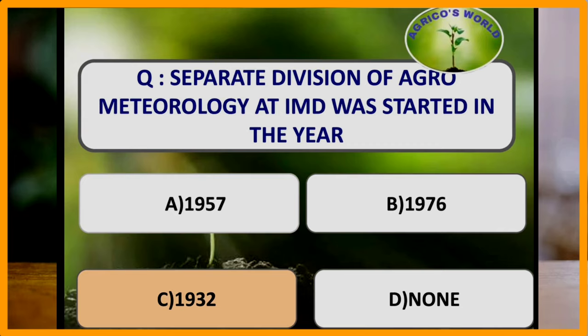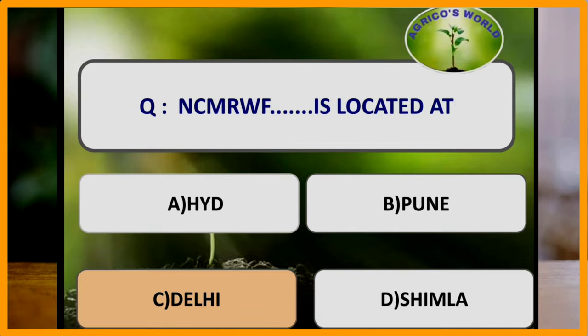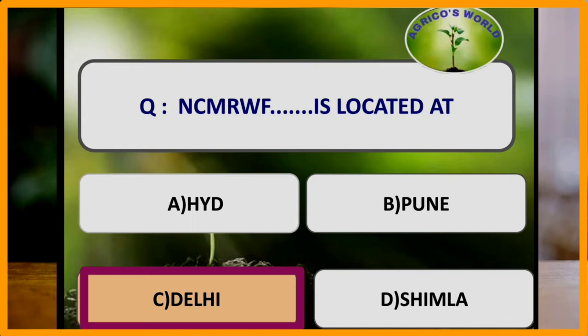Separate division of agrometeorology at Indian Meteorological Department was started in which year? The separate division for agrometeorology at IMD was started in the year 1932. National Centre for Medium Range Weather Forecasting was established in the year 1988 and it is located at Delhi.